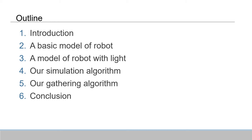This slide shows an outline of my talk. My presentation consists of six parts. First, I'll give some background information on autonomous mobile robots. Next, I'd like to describe the basic model of the robot. After that, I'll describe a more powerful model with light. In parts 4 and 5, I'll give two algorithms to solve the gathering problem by robots with light. Finally, I'll finish with a brief conclusion.